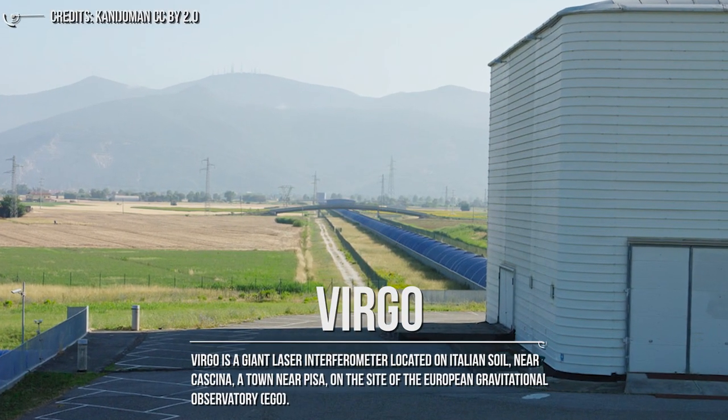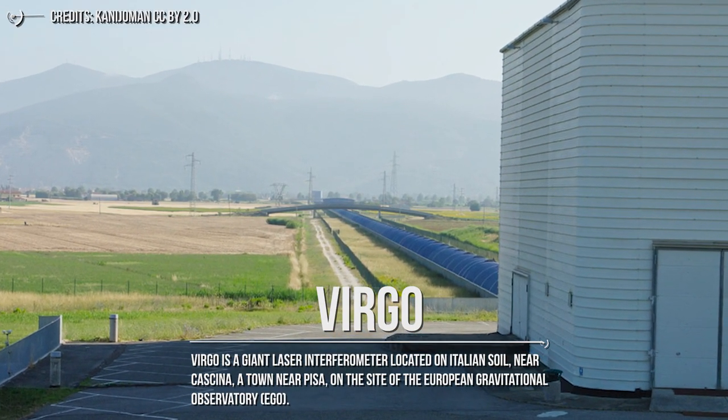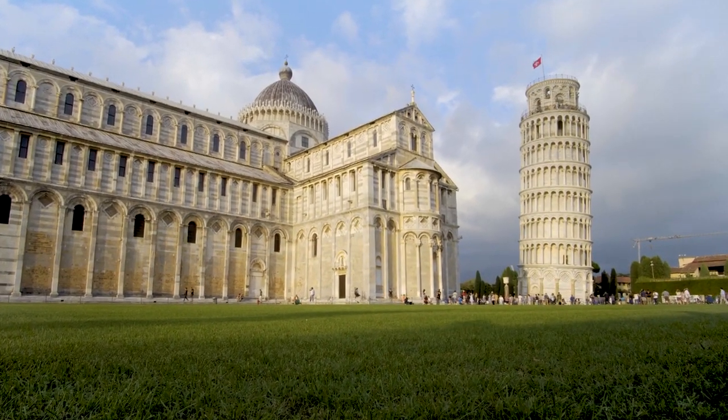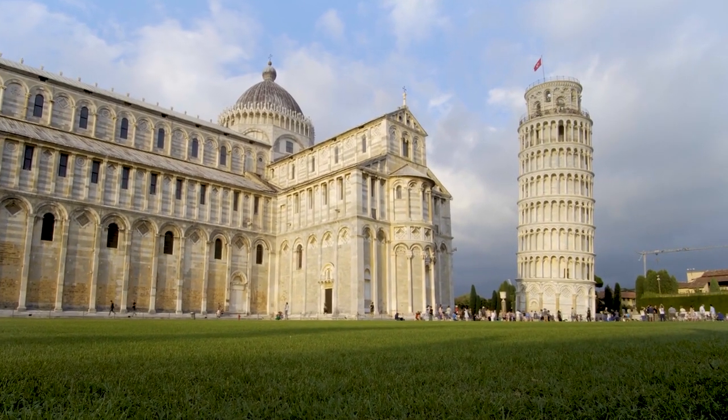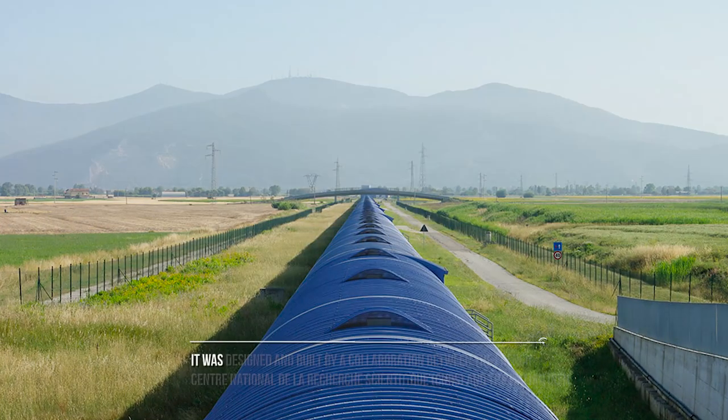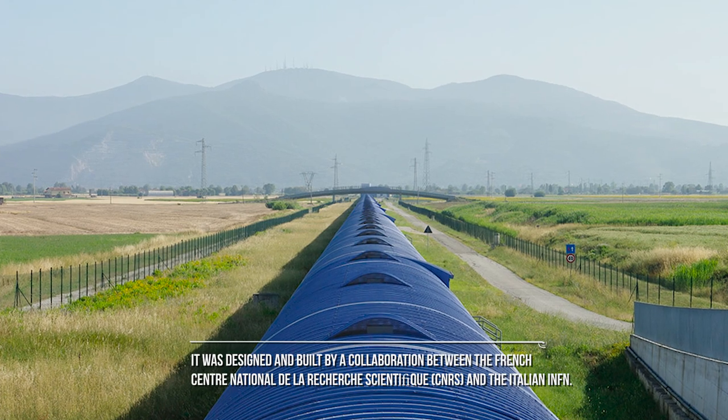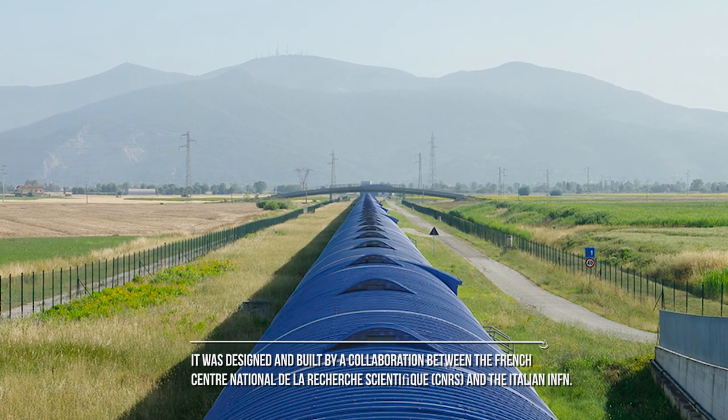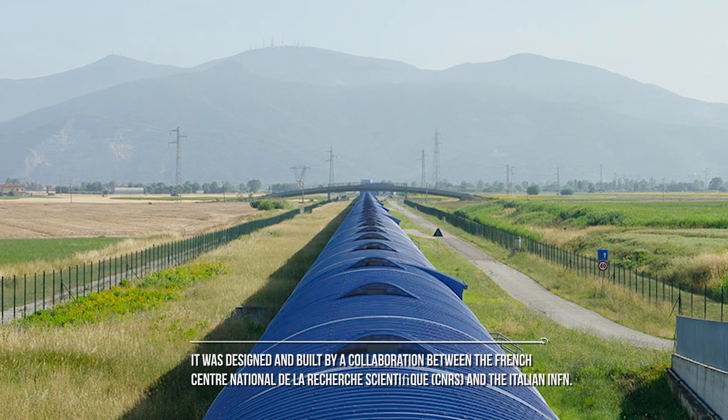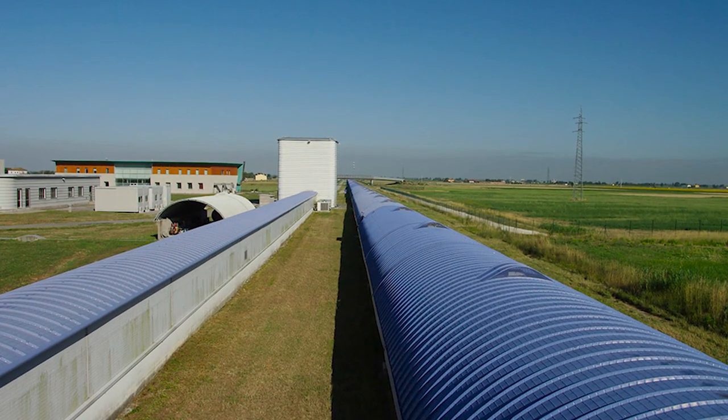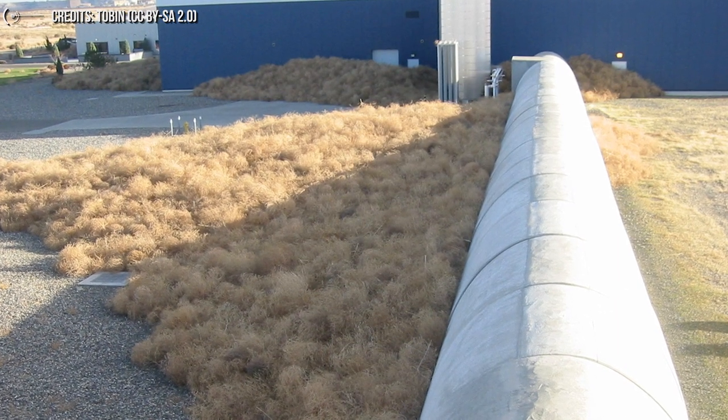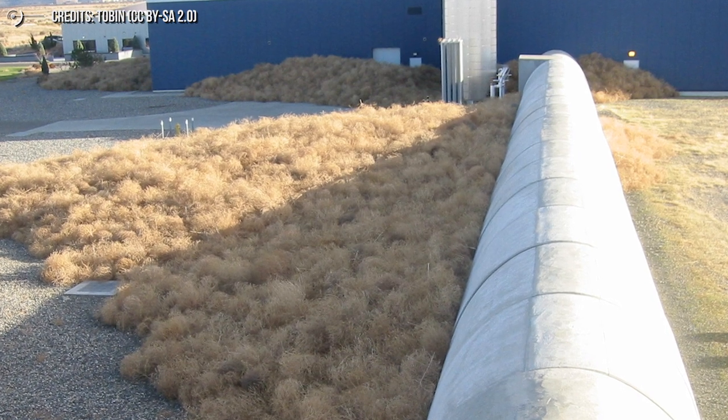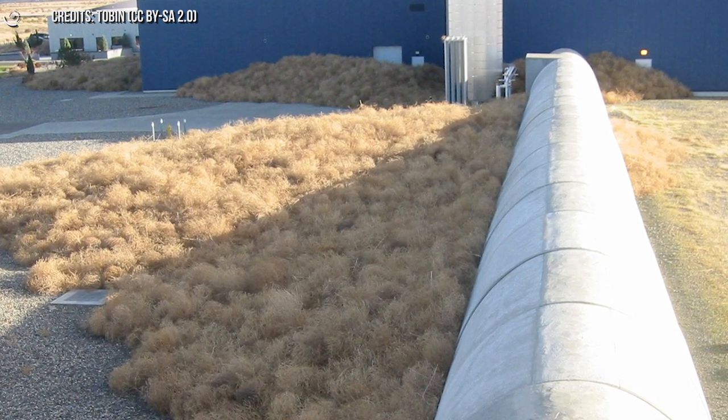Virgo is a giant laser interferometer located on Italian soil near Cascina, a town near Pisa, on the site of the European Gravitational Observatory EGO. It was designed and built by a collaboration between the French Centre National de la Recherche Scientifique and the Italian INFN. The detector has two arms, three kilometers each, and is therefore a little less sensitive than LIGO. However, since its first activation, which occurred in 2007, Virgo has been upgraded and updated in time.